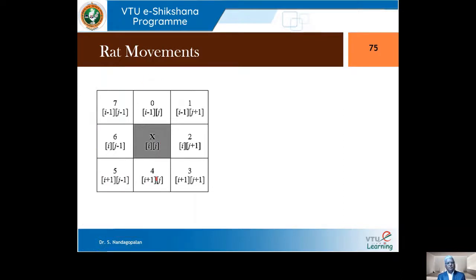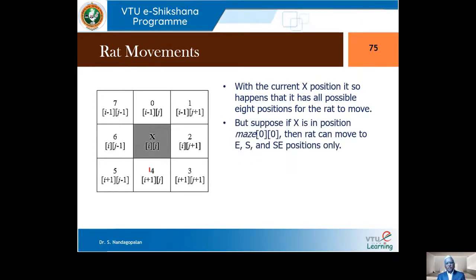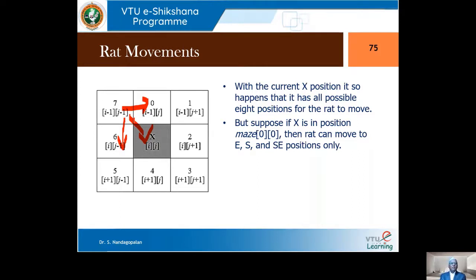The array is called maze. When the rat is at a corner, it may have only three possible movements — for example, east, south, and southeast. So we cannot always assume eight directions are available. Instead of calculating this every time, we use a pre-stored lookup table to readily get this information.